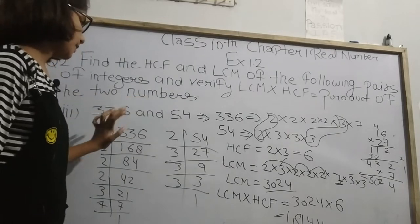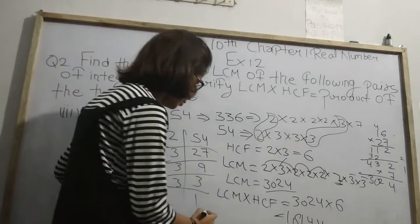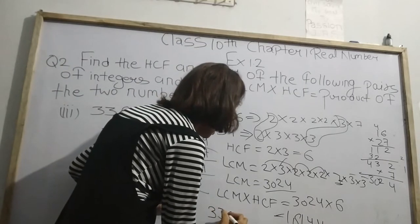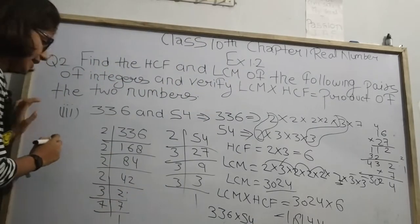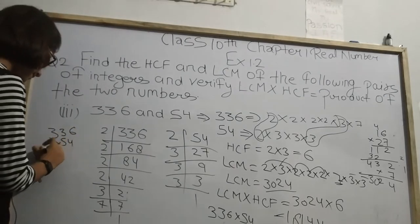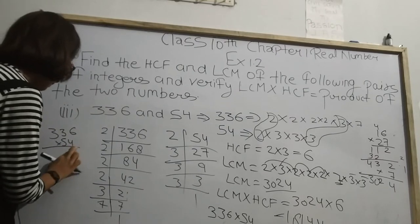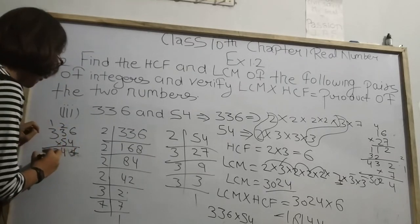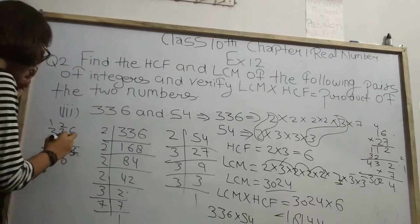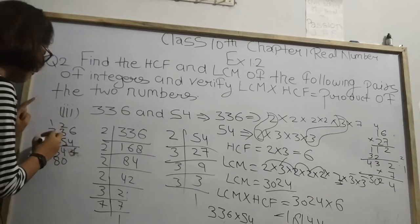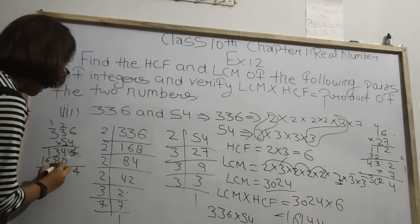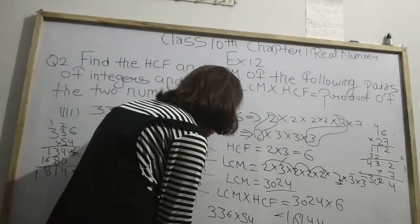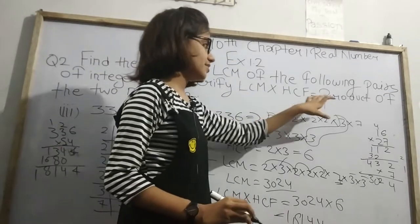Now we need to verify this equals the product of the two numbers: 336 × 54. Multiplying: 4 × 6 = 24, carry 2; 3 × 4 = 12 + 2 = 14, carry 1; 3 × 4 = 12 + 1 = 13. Then by 5: 5 × 6 = 30, carry 3; 5 × 3 = 15 + 3 = 18, carry 1; 5 × 3 = 15 + 1 = 16. Adding together: 1344 + 16800 = 18144. So this equals 18144, which means it is verified — LCM × HCF equals the product of the two numbers.